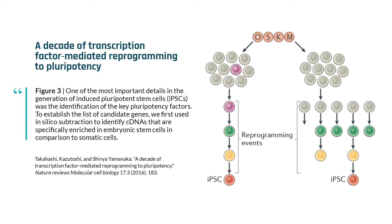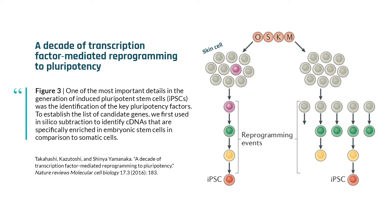To go back to what you were saying about the epigenetic clock and aging — with the Yamanaka factors, these transcription factors are able to take an already differentiated cell, like a skin cell or a neuron or a liver cell, and turn it back into a stem cell, a pluripotent stem cell.